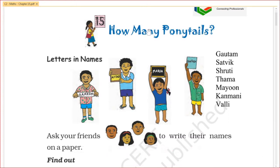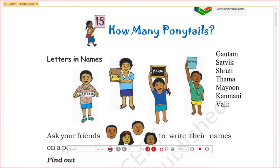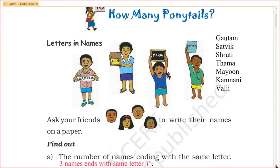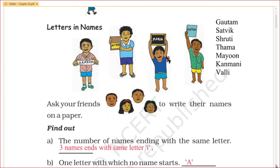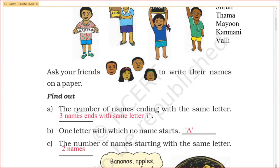Hi kids, I am going to talk to you about how many ponytails. Letters in names: Ramesh, Aftab, Maria, Santosh. Ask your friends to write their names on a paper. Find out the number of names ending with the same letter. What are the questions about? How many — can we go to the number of names?